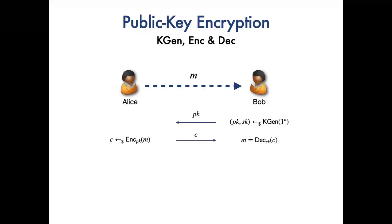A public key encryption consists of three algorithms for key generation, encryption, and decryption. In the message communication scenario, suppose Alice wants to send a message M to Bob. First, Bob uses keygen to generate a public secret key pair, pk and sk, and sends the public key pk to Alice.